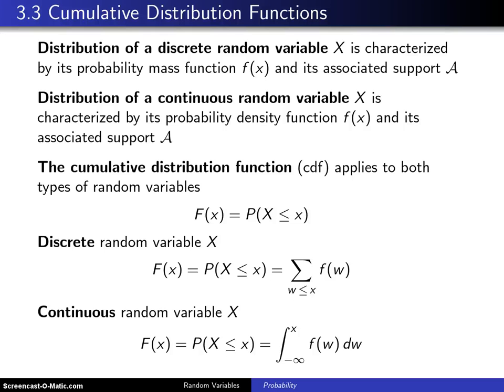Cumulative distribution functions are taken up in this new section, which is section 3.3. To quickly review, the distribution of a discrete random variable X is characterized by its probability mass function f(x) and its associated support, script A. That was the essence behind section 3.1.